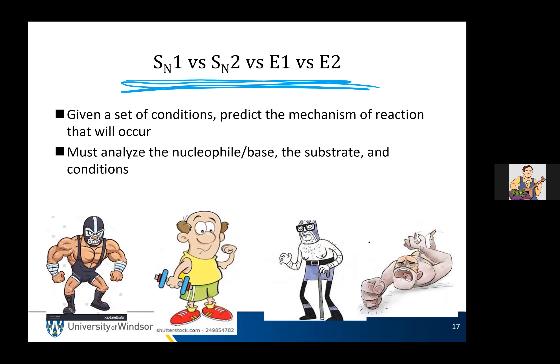E2 and SN2 prefer polar aprotic; E1 and SN1 prefer polar protic. Next class we're going to go through these quadrants, try to do these analyses, and solve problems with it. Have a good weekend, everyone.